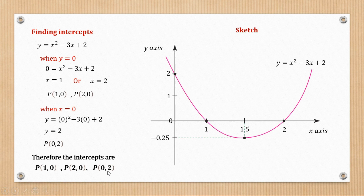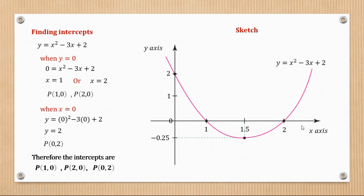To sketch the curve, first place the intercepts: (1, 0) here, (2, 0) here, and (0, 2) there. Then place the turning point (3/2, -1/4). Once you've done that, sketch a curve connecting those different points, and that's how you get the curve for y = x² - 3x + 2.